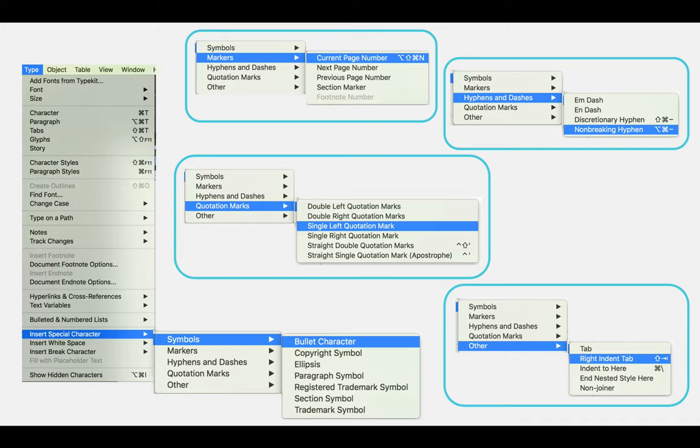I'll show you a few screenshots to show you where you'd find all these different options. The best way to use them is just to play with them. Use the Type menu, Insert Special Character, and then just see what the options are.